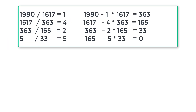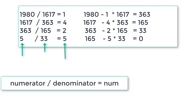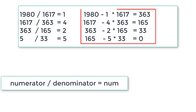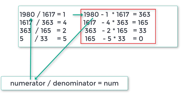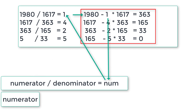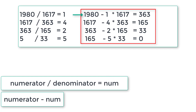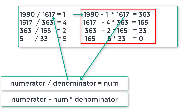Let me take this first section — this is the numerator and this is the denominator. I'll call the result as maybe num. So numerator divided by denominator equals num — that's our first equation. Now 1980 is numerator, so numerator minus num multiplied by 1617, which is the denominator, gives a result I'll call temp.